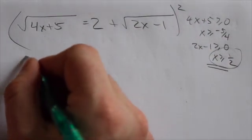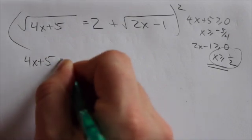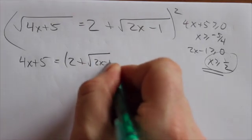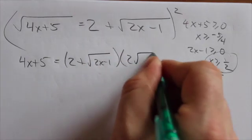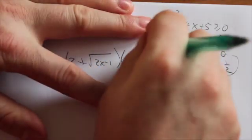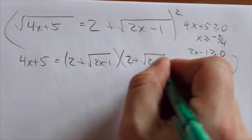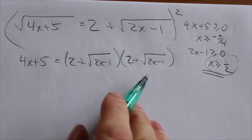So on the left-hand side, that's nice, that just gives us 4x plus 5. But on the right-hand side, we have to square the binomial. Sorry, that won't look like a binomial, so I'll just erase that. Okay, that has to be a binomial.